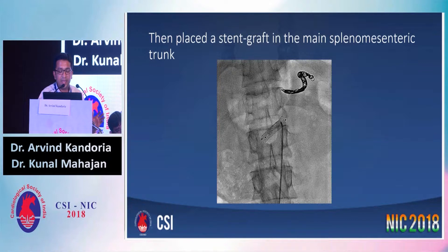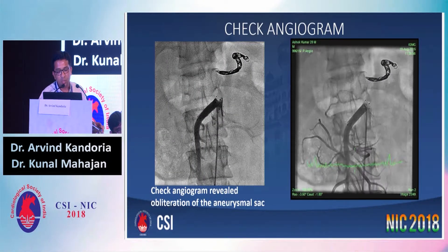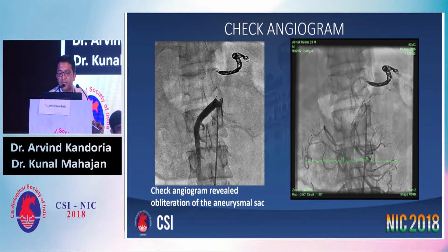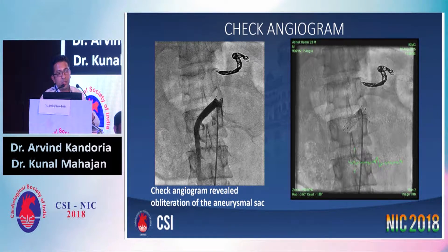We then placed a stent graft across the SMA, obliterating the aneurysm proximally as well. The check angiogram revealed that there was no flow across the aneurysm. The aneurysm had been totally trapped distally as well as proximally, with no evidence of any residual aneurysm.